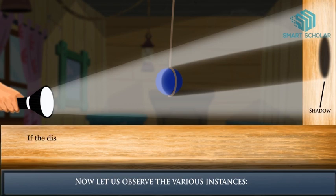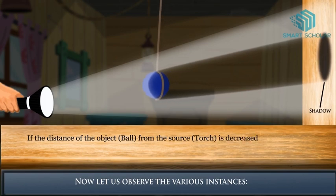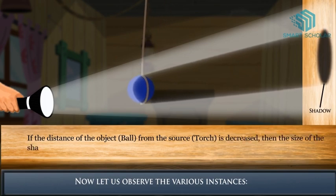If the distance of the object, which is the ball, from the source, which is the torch, is decreased, then the size of the shadow increases.